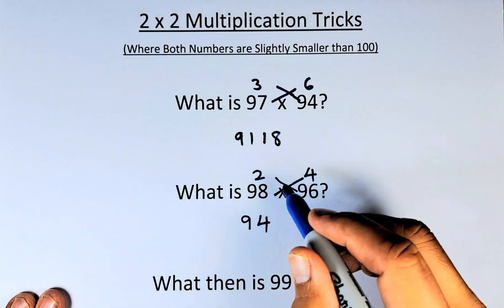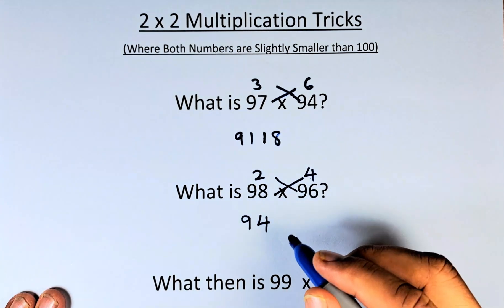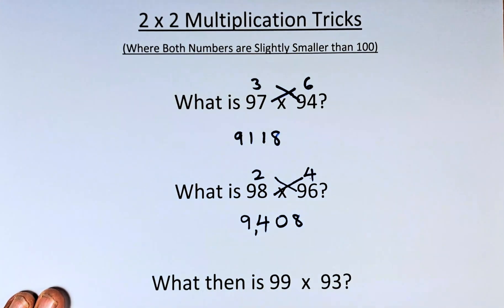And last but not least, we multiply 2 times 4, which is 8. But because it's a 4-digit answer, we write 08. So 98 times 96, the answer is 9,408.